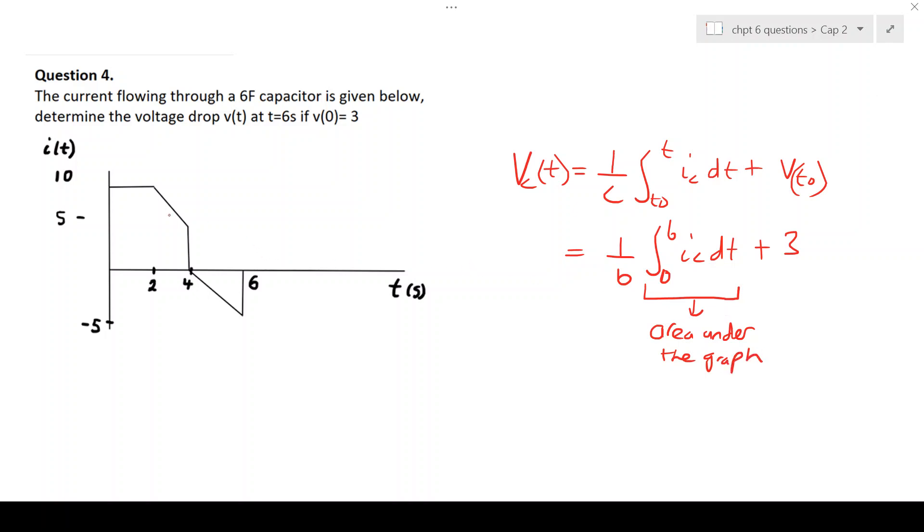So we can break this up to make it simpler for us. And we can say that from here to here is 10. This is 5.